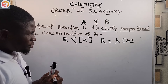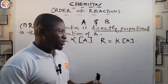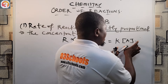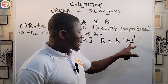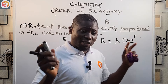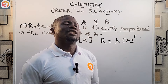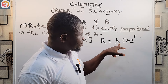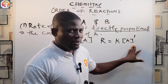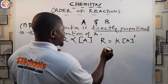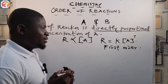So if the concentration of A increases by a factor of four, the rate of reaction also increases by a factor of four. Mathematically, R is directly proportional to [A], and removing the proportionality sign gives R = k[A]. In this case the equation is first order with respect to A, because A is raised to the power of one.